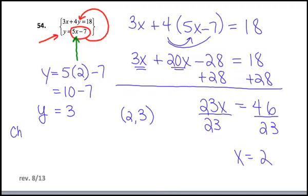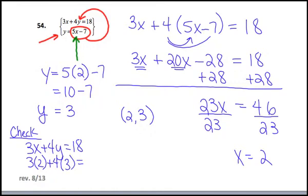I really should check it in both equations. I'm going to do it for this one. So the first equation is 3X plus 4Y equals 18, and I believe that X should be 2, and that Y right here should be 3. And if I'm correct, then this 6 plus 12 should equal 18, and sure enough, it does.